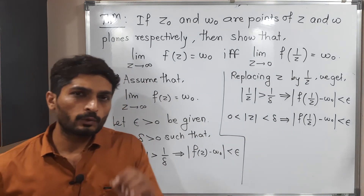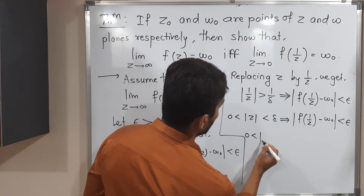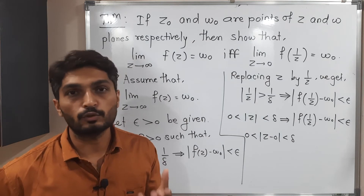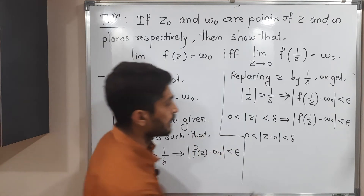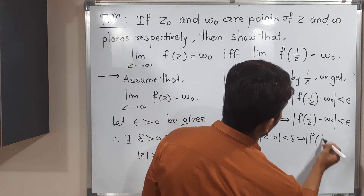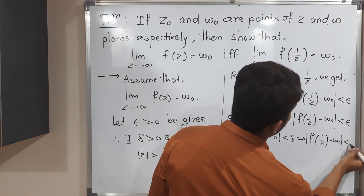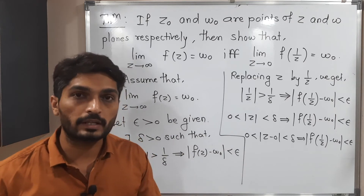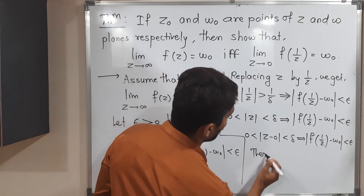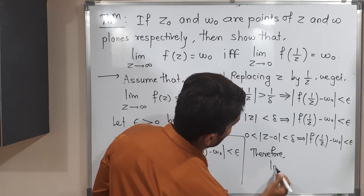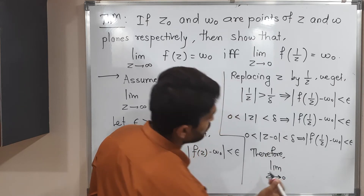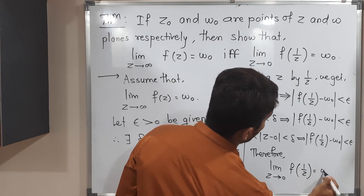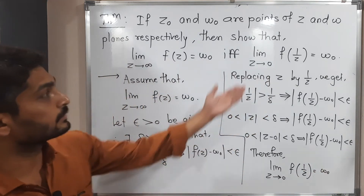I will make a small adjustment: writing 0 less than mod(z minus 0) less than delta implies mod f(1/z) minus w₀ less than epsilon. Since z minus 0 is just z, this is the same step. By the epsilon-delta definition of limit, we can therefore write: limit as z tends to 0 of f(1/z) equals w₀. That is exactly what we needed to prove.